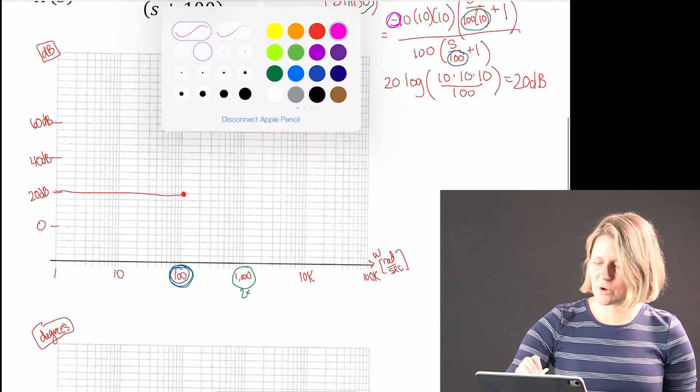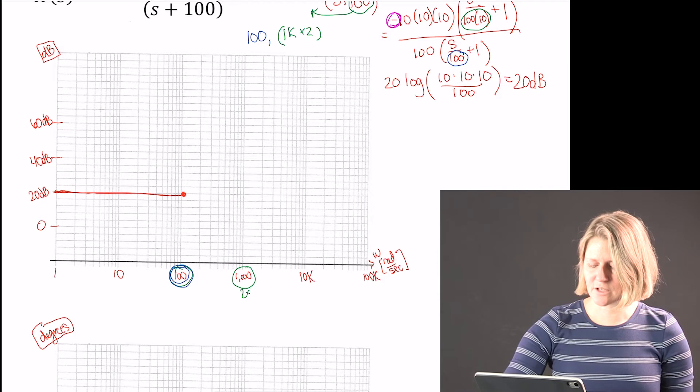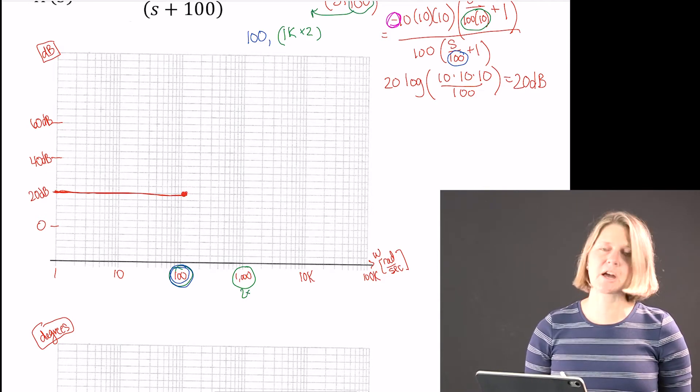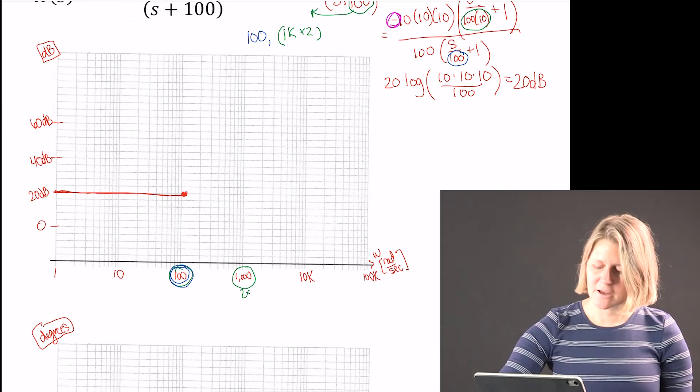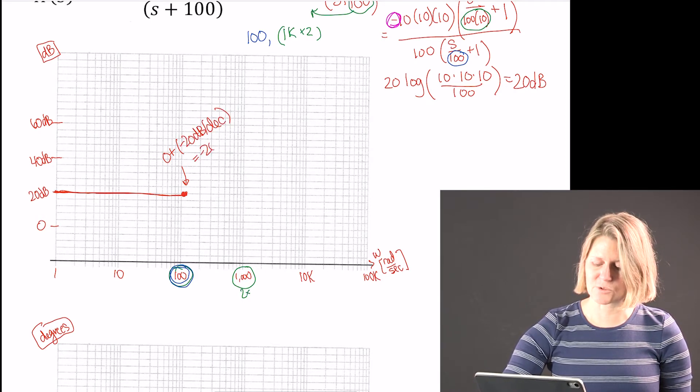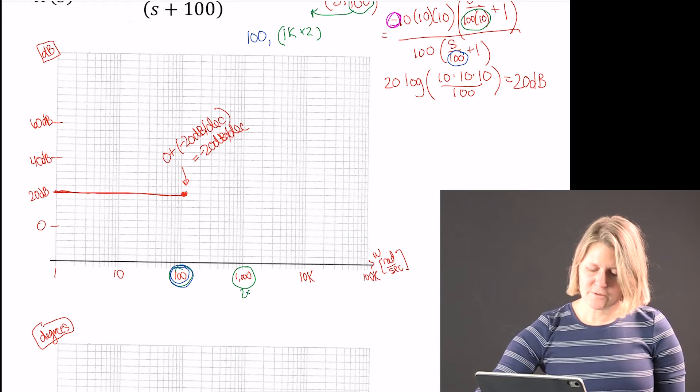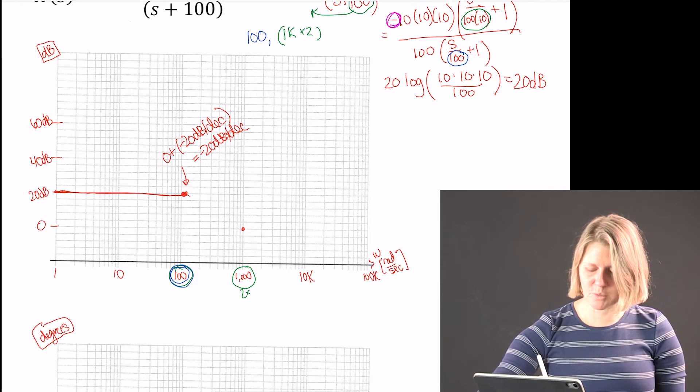So here we're going to graph this. We have a flat line, as you can see here, until we reach 100. At 100 we have the effect of a pole which is minus 20 dB per decade. So starting already at zero we're going to add on a minus 20 dB per decade change and the slope now becomes minus 20 dB per decade.